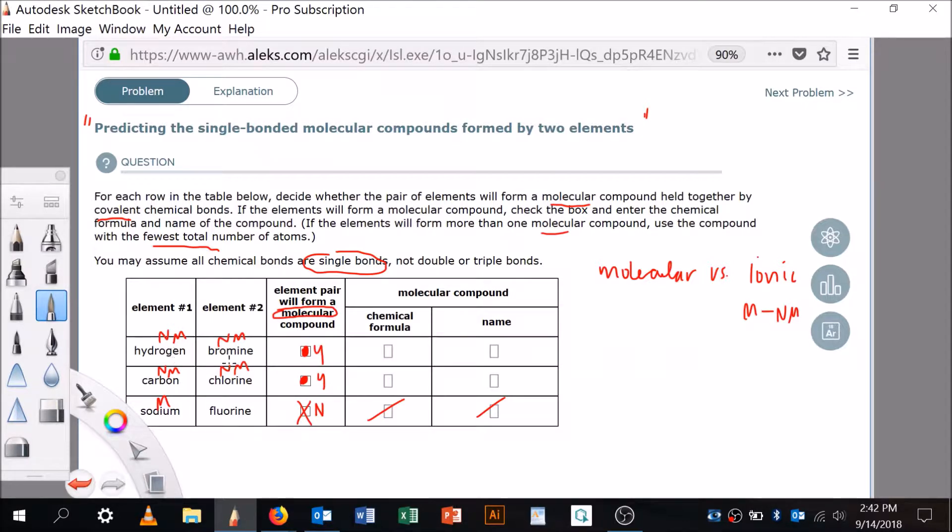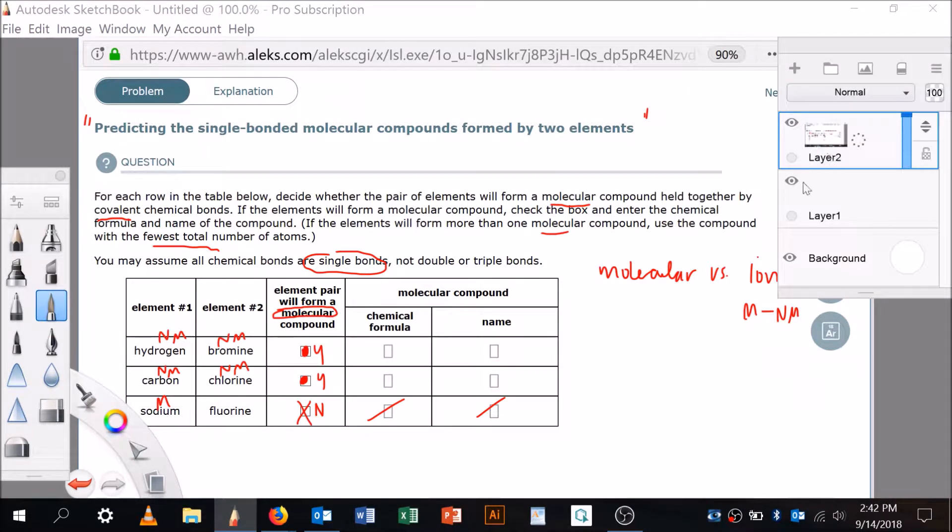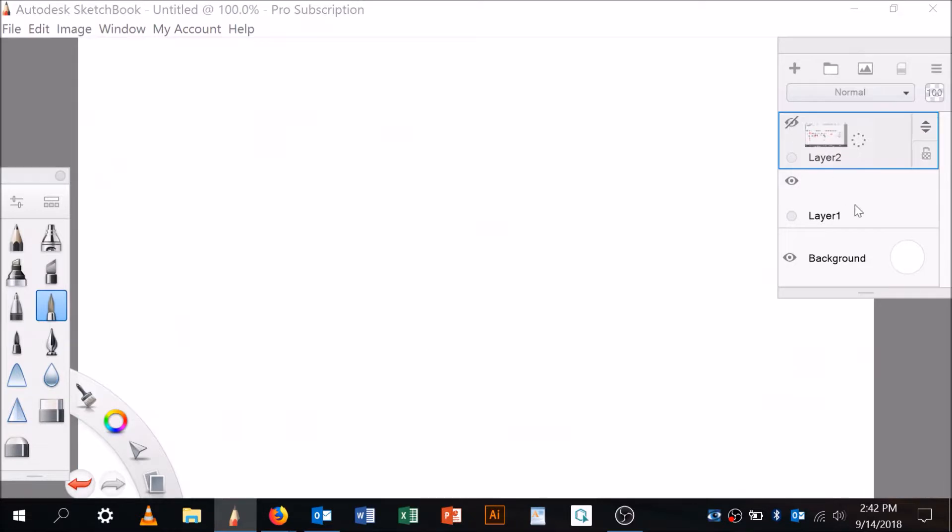Now we have to say, all right, hydrogen and bromine. So what I'm going to do is I'm going to open up a new layer so I can disappear this. And let's go here. Hydrogen and bromine. And the way to do this then is to go through and make the molecular building Lewis structure for it, right?